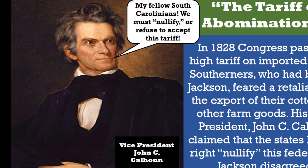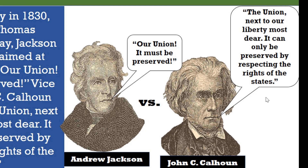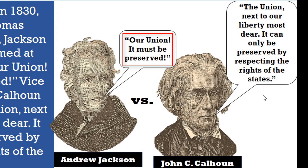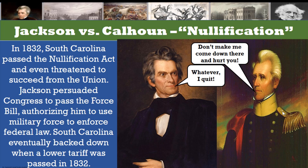Jackson's Vice President, John C. Calhoun, from South Carolina, claimed that states had the right to nullify this federal law. At a dinner party in 1830 celebrating Thomas Jefferson's birthday, Jackson offered a toast aimed at Calhoun, saying, 'Our union, it must be preserved.' To which Vice President John C. Calhoun responded, 'The union, next to our liberty, most dear — it can only be preserved by respecting the rights of the states.' This interchange demonstrated the split between those favoring a strong central government and those who were for states' rights, one that still exists today.